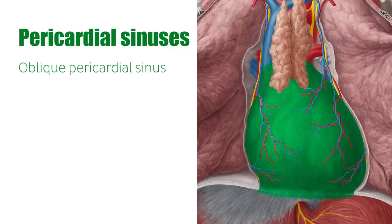The oblique pericardial sinus exists in the posterior part of the pericardium, and is bordered laterally by the pulmonary veins which enter the heart, and inferiorly by the inferior vena cava which is also returning to the heart.